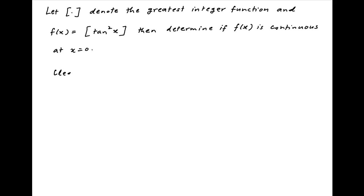When x is equal to 0, tan square x is equal to 0, which implies that the integral part of tan square x is equal to 0. Therefore, clearly f of 0 is equal to 0.